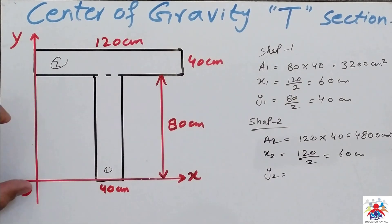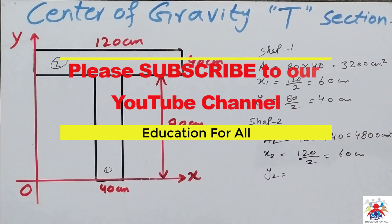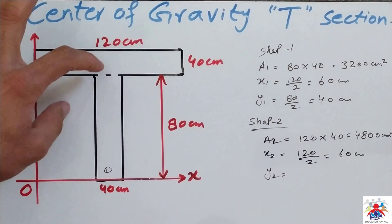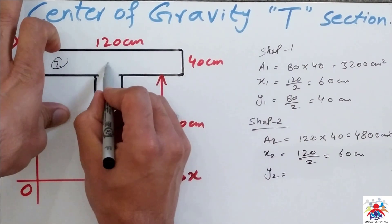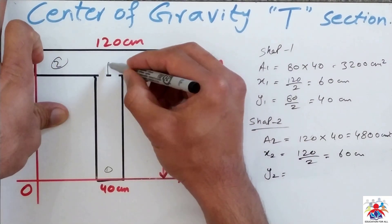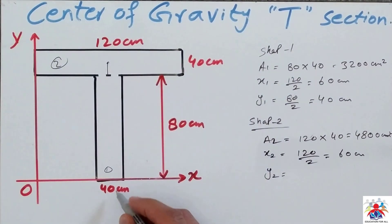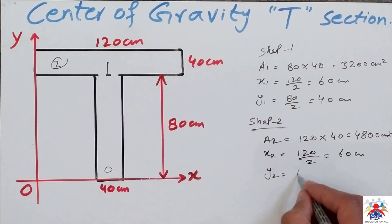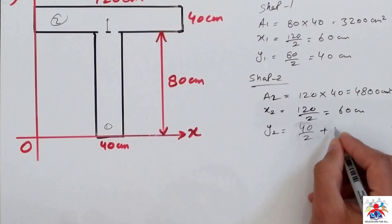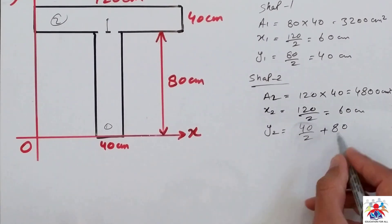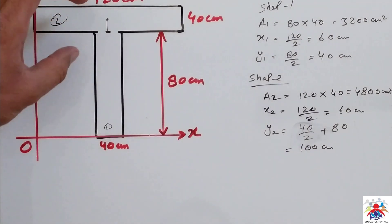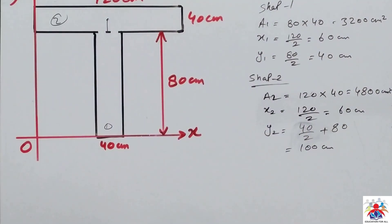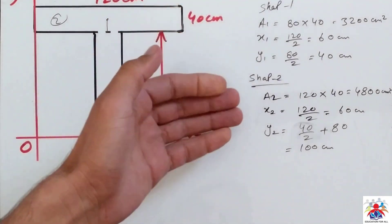For y2, we consider it from the bottom to the top of our section. The middle of shape two is 20 centimeters. From there to the bottom of the x-axis line is 80 centimeters. So y2 equals 40 divided by 2 plus 80, which gives us 100 centimeters for shape two.